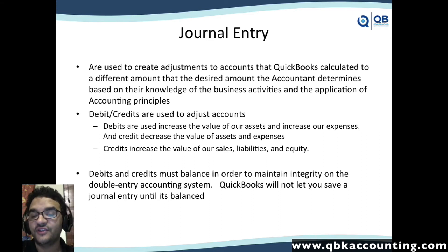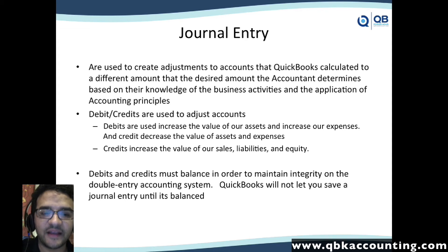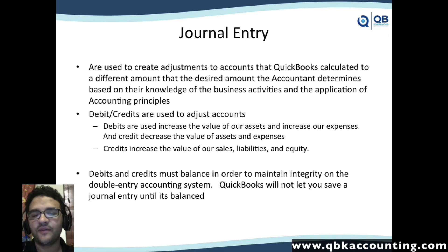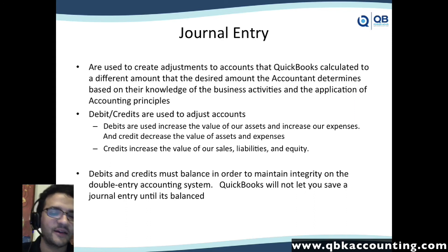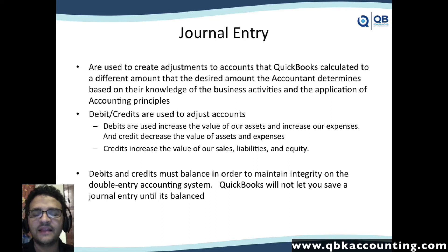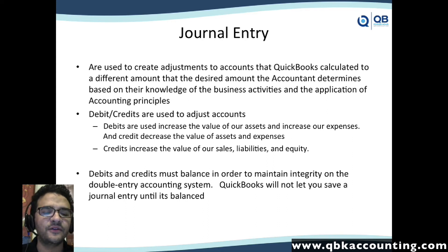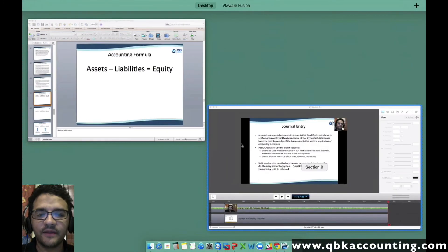That's different from what QuickBooks is giving you, and it requires the accountant or somebody that understands these concepts to adjust it. We then create a journal entry, which is a debit or a credit into the accounts we're trying to adjust. We use debits to increase the value of assets and expenses, and credits to decrease assets or expenses. We use credits to increase sales, liabilities, or equity, and debits to decrease them. At the end, debits and credits must balance — that's the integrity of the double-entry accounting system — and QuickBooks won't let you do an unbalanced journal entry.